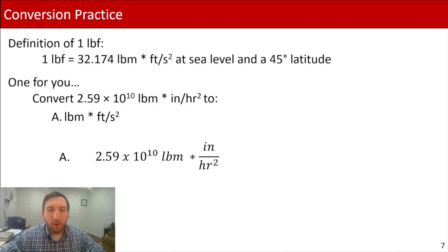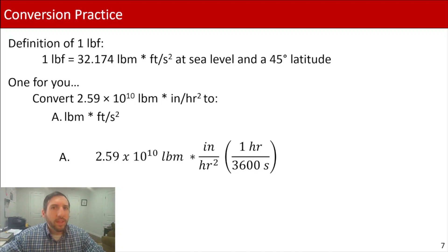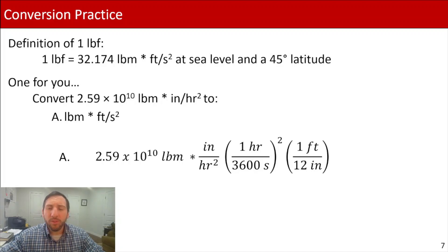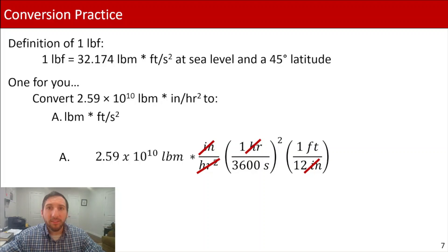In part a, we've got 2.59 times 10 to the 10 pound mass times inch per hour squared. We're going to first convert hours into seconds using the conversion factor: one hour equals 3,600 seconds. Notice we have hours squared in the denominator, so we have to square our conversion factor — giving us hour squared in the numerator and denominator to cancel properly. Then we convert inches into feet using one foot equals 12 inches. Doing dimensional analysis confirms inches cancel and hour squares cancel. Multiplying everything out gives us 167 pound mass times foot per second squared.